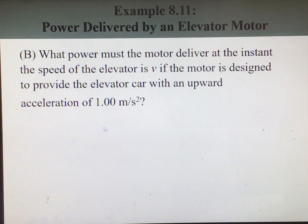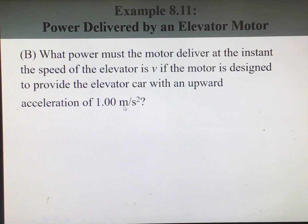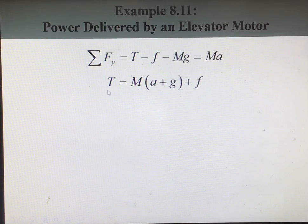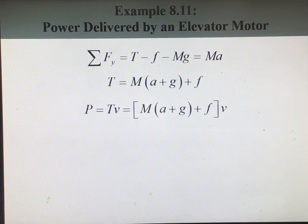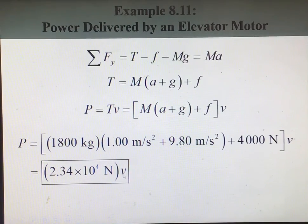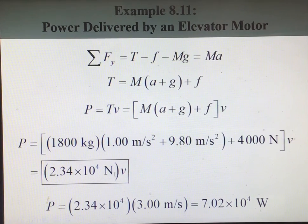For part B, what power must the motor deliver at an instant when the speed is V, if the motor provides an upward acceleration of 1.0 m/s²? Now there is acceleration in the system, so the net force equation gives: tension minus friction minus M × g equals M × a. Solving for the tension force and then computing power as tension times velocity, you get P = 2.34 × 10⁴ × V. This is not constant — it changes as a function of time. Plugging in V = 3.0 m/s gives a power of 7.02 × 10⁴ watts.